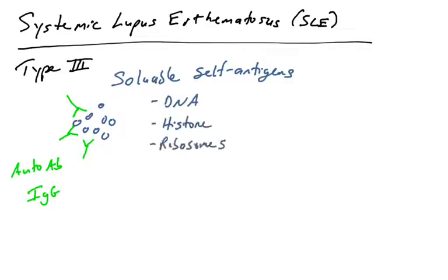In the case of SLE, the soluble self-antigens include DNA, histones, ribosomes, and other ribonucleotide proteins. Now, what's interesting is to think about the fact that it's possible to make antibodies to something that is found inside of cells.